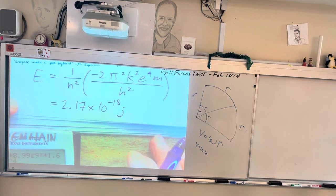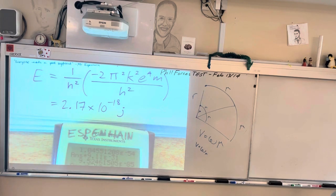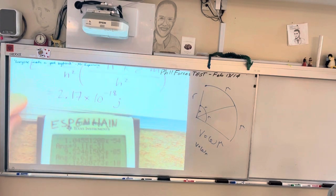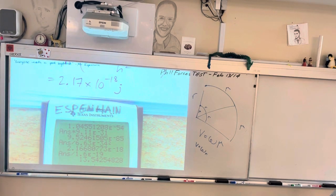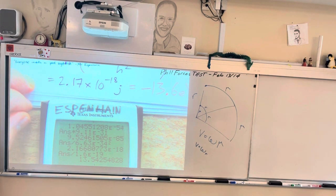And then you have to divide by the number of joules in an EV, which is... so you divide that by 1.6 times 10 to the negative 19. And you get... I actually got 13.5. But if you put in all the proper constants to the right decimals, you will get negative 13.6 EVs.